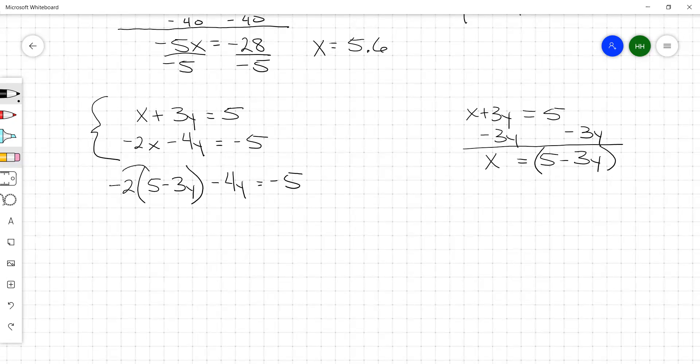Distribute. We would get negative 10 plus 6y minus 4y equals negative 5.